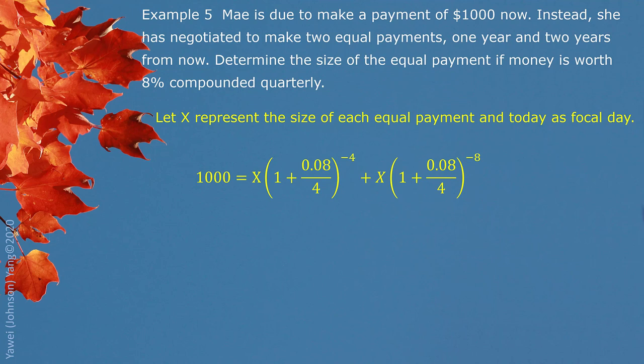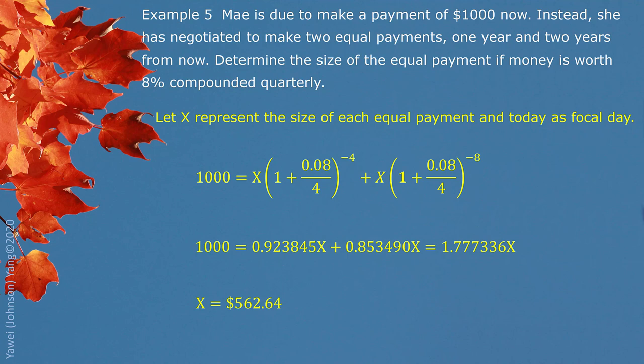We are looking for the present value of each X. One year equals 4 quarters; two years equals 8 quarters. The two present values together should equal $1,000. We calculate the coefficient for each X, combine them, and solve: 1,000 divided by the combined coefficient 1.777336 — keeping a long decimal to ensure accuracy — gives us the answer. The two equal payments should each be $562.64.